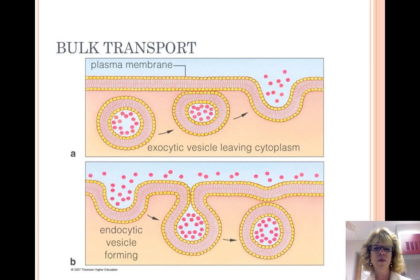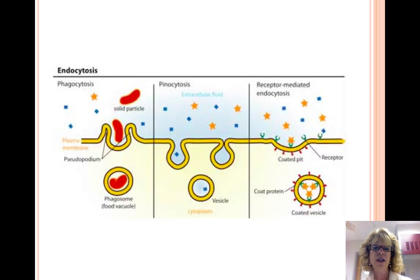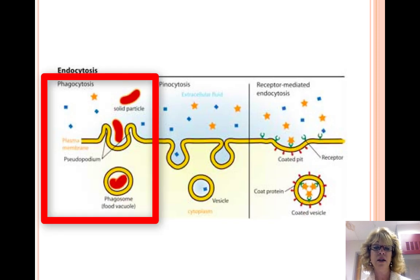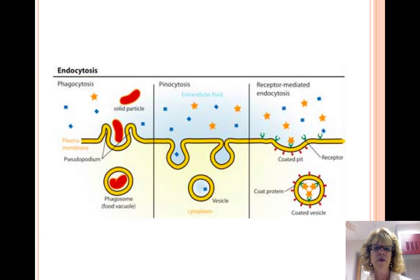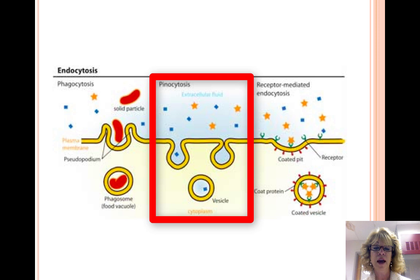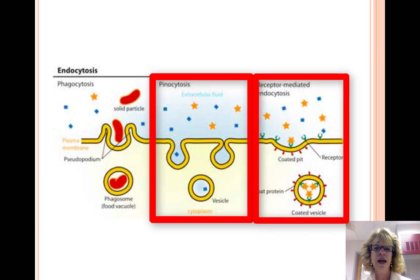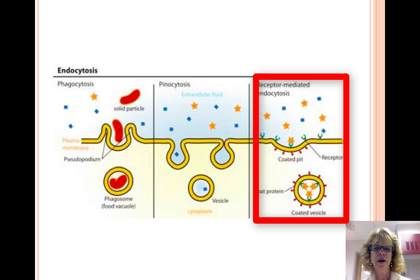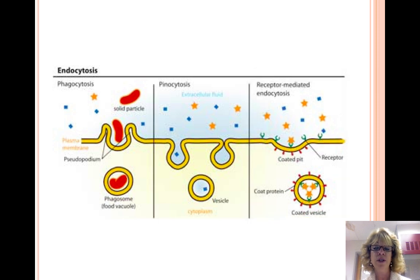Endocytosis is the movement of materials like macromolecules into the cell by forming vesicles or vacuoles from the cell membrane. Phagocytosis is cell eating — taking in solids — and the vesicle will fuse with the lysosome to digest the contents. Pinocytosis is cell drinking, taking in fluid. Receptor-mediated endocytosis is highly specific: the cell membrane indents to form a pit, which is lined with receptor proteins that bind to molecules, and the vesicle forms and carries molecules into the cell.